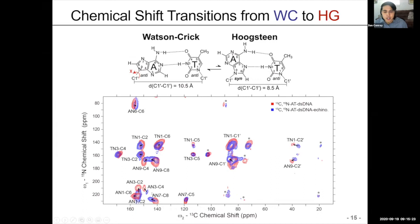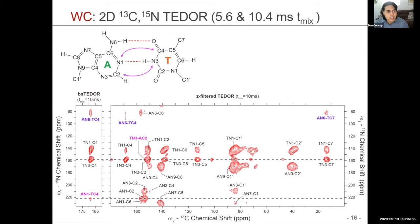Moving to longer mixing time TEDOR experiments — from 5 to 10 milliseconds — this is a combination of both durations. We're looking for through-space distances going from one base to the other. We see a lot of additional correlations. In particular, an AN6 strip correlates to a different base. We also see a TN3-to-AC2 correlation that pops up more as a shoulder — not as definitive as a peak, but it is uniquely appearing.